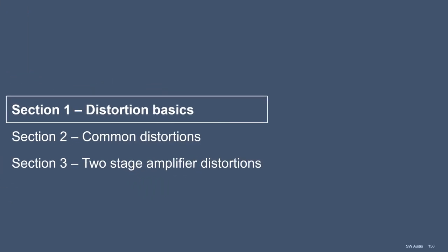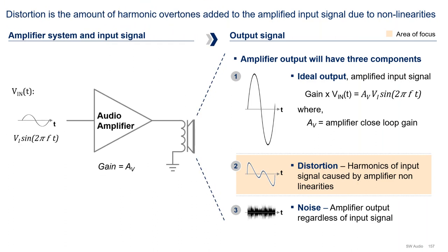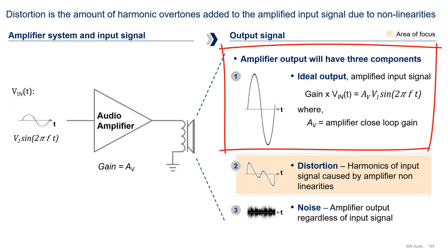So let's jump to our first topic: distortion basics. Distortion is the amount of harmonic overtones added to the amplified input signal due to non-linearities. When you drive an amplifier with an input signal — a sine wave, for example, but it can literally be any signal — what you get at the output are three things. The ideal output, which is an amplified version of the input signal.